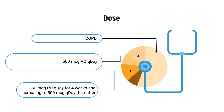Dose — Chronic obstructive pulmonary disease: Indicated to reduce the risk of COPD exacerbations in patients with severe COPD associated with chronic bronchitis and a history of exacerbations. The dose is 500 mcg PO once daily. Starting treatment with 250 mcg PO once daily for 4 weeks and increasing to 500 mcg once daily thereafter may reduce the rate of treatment discontinuation in some patients. Note: 250 mcg per day is not the effective therapeutic dose.